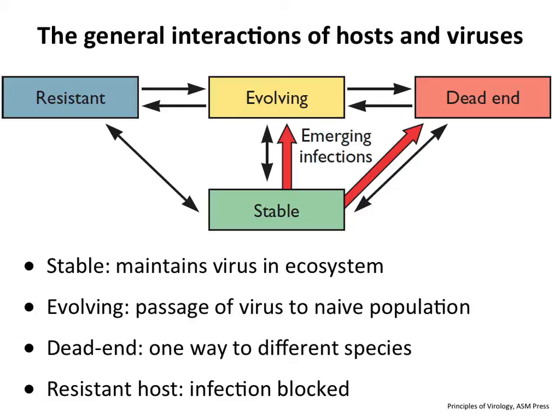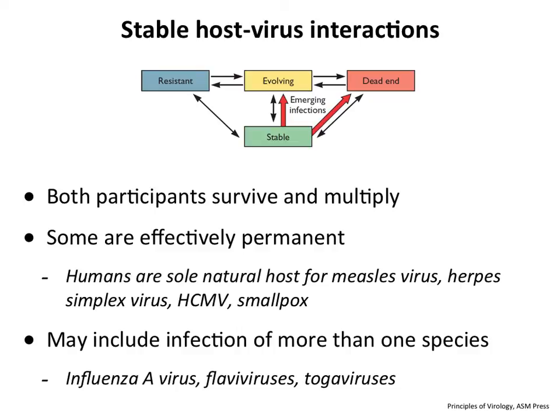Sometimes you have a dead end: the virus enters a human, may replicate a bit, then stops — your immune system clears it and it never goes beyond that. Or there can be cases where a dead end leads to disease but you don't transmit it to anyone. Finally, there are cases where you're infected but there's no replication because the host is resistant. In a stable host-virus interaction, viruses in a stable relationship can also infect resistant or dead-end hosts, or cause an evolving infection.